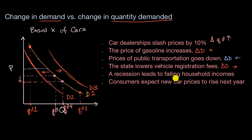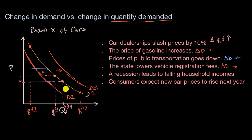A recession leads to falling household incomes. Falling household incomes is actually analogous in some ways to the price of gasoline increasing, because people are just going to have less income regardless of what point we are on the curve — people are just going to be able to buy less. So that's going to shift the entire demand curve to the left. It's a change in demand, going to the left.